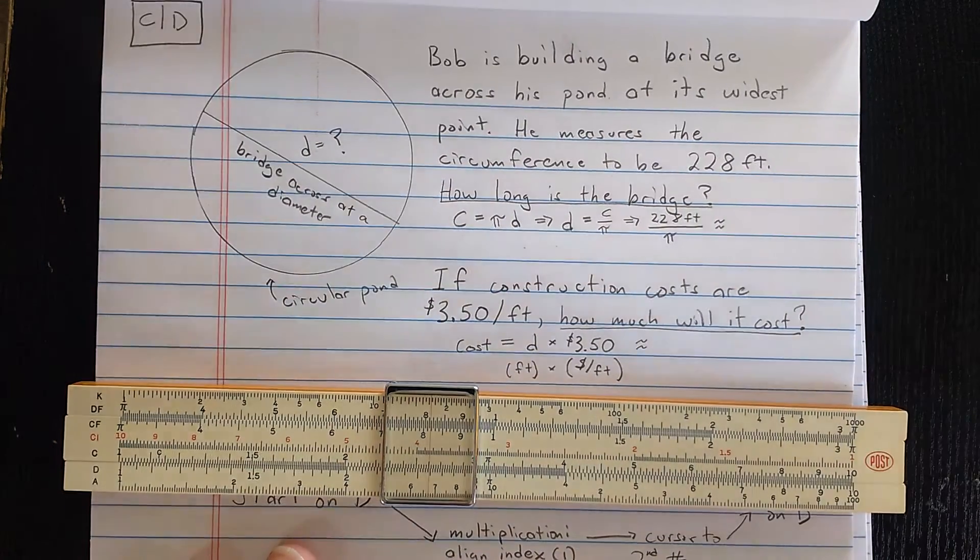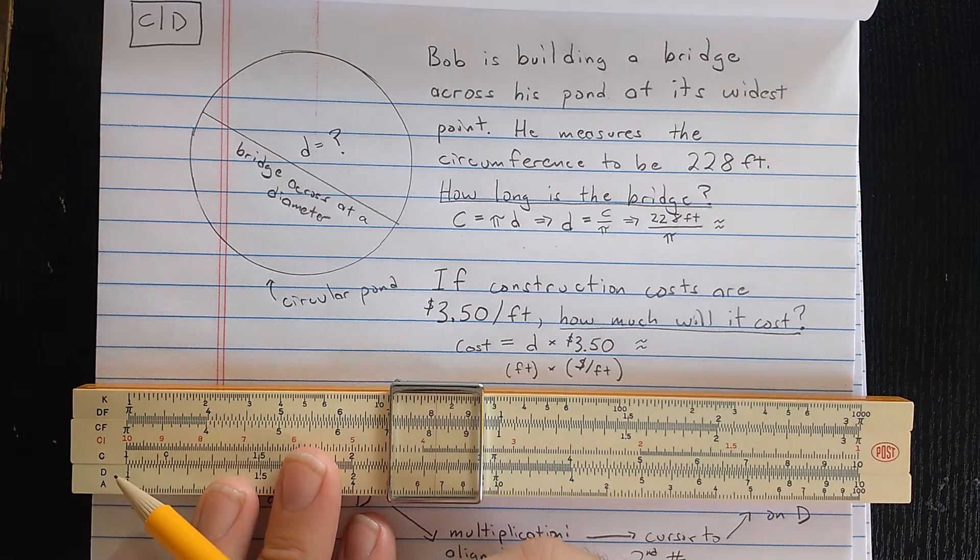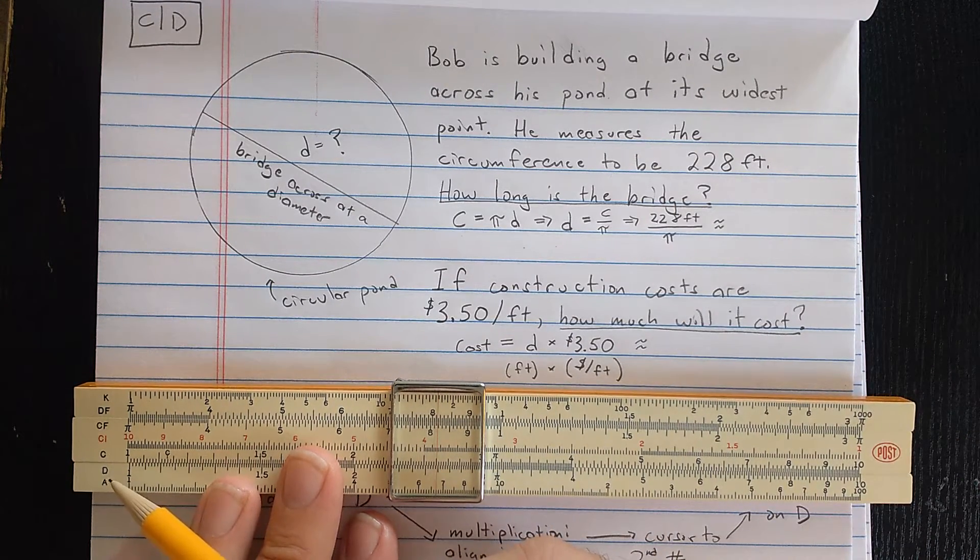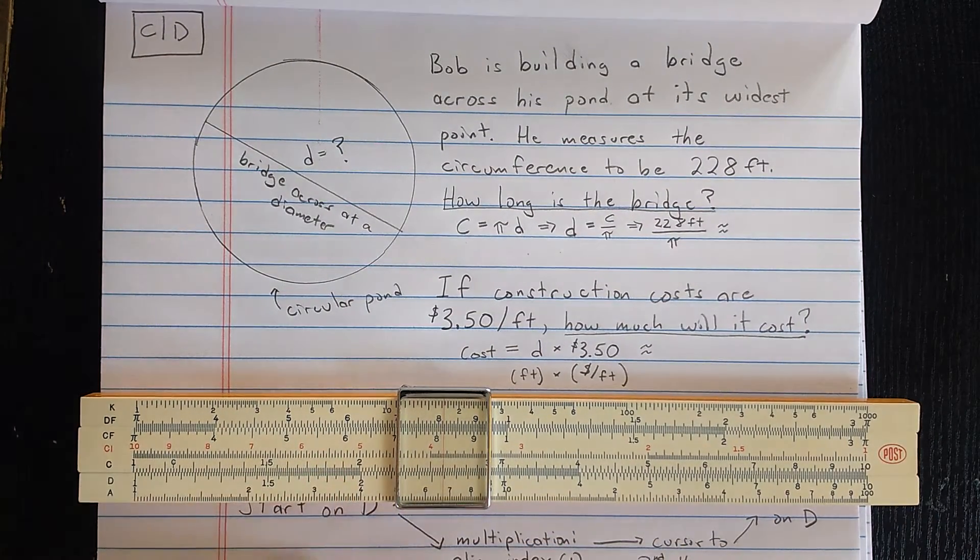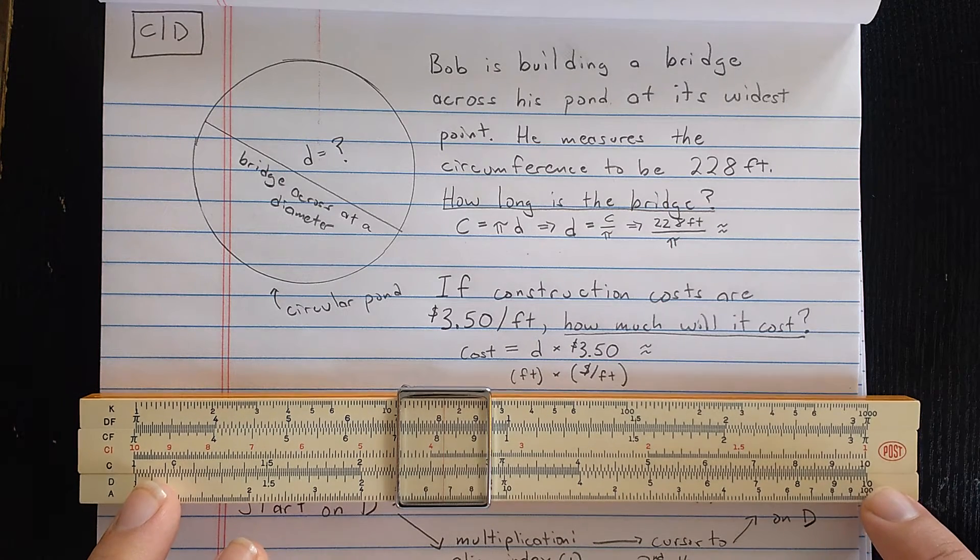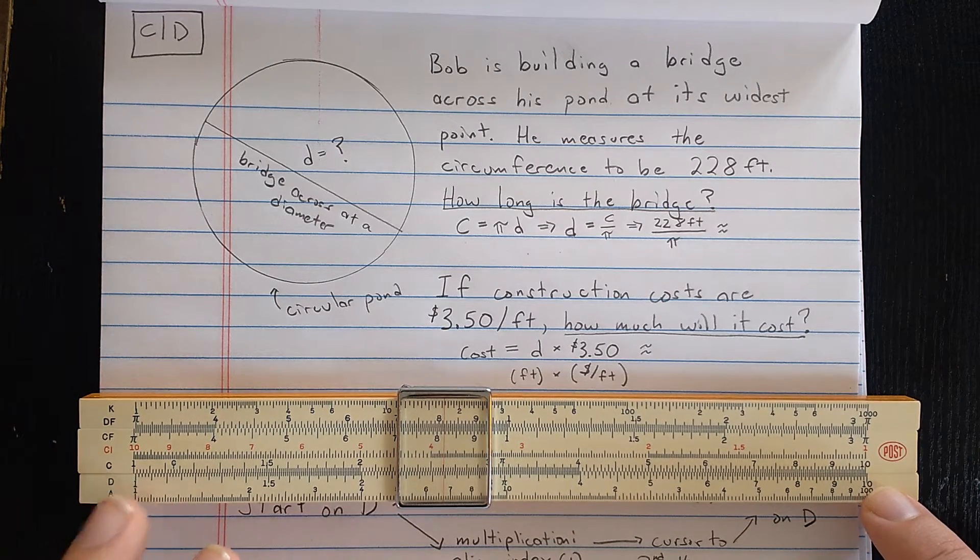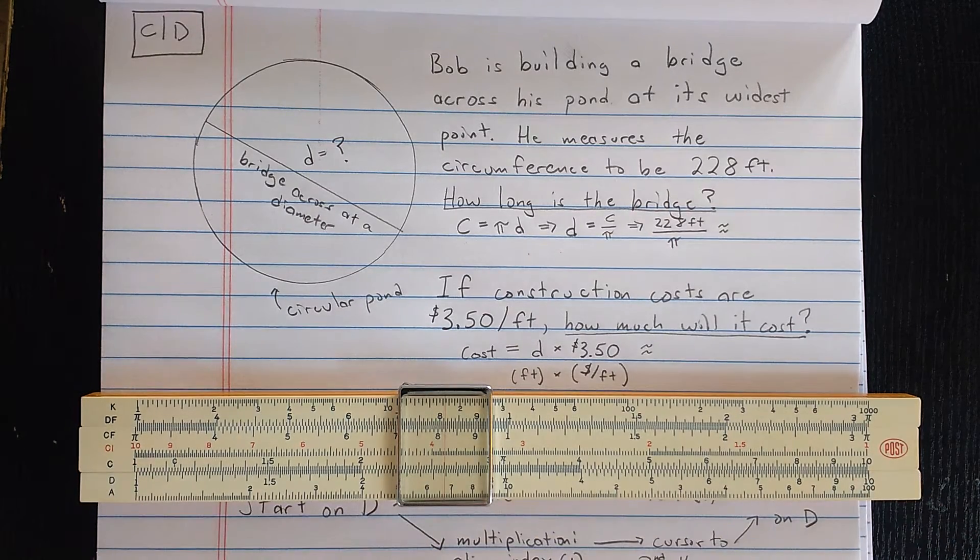Now, most slide rule operations are set up to read the result on the D scale. For this video, I'm only going to use the C scale and the D scale, which are identical scales running from 1 to 10. This 10 is sometimes marked as a 1. This is called the left index, and this is called the right index.